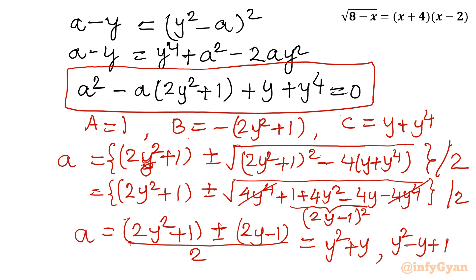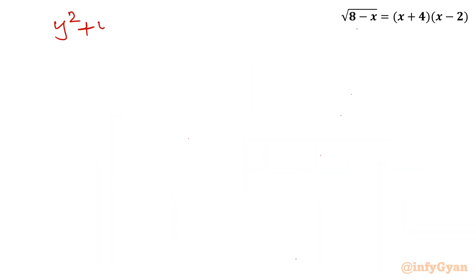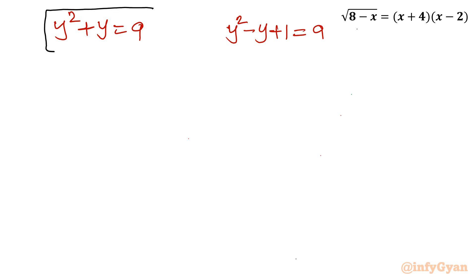Since a equals 9 from our substitution, we now have two quadratic equations to solve: y squared plus y equals 9, and y squared minus y plus 1 equals 9. These give us y squared plus y minus 9 equals 0 and y squared minus y minus 8 equals 0.